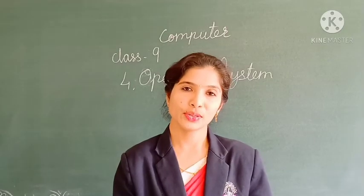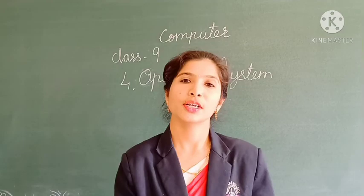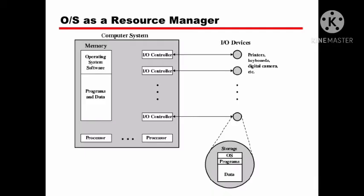Now we are going to see operating system as resource management. A multitasking operating system offers major advantages over a single tasking operating system. An operating system manages the computer's memory — it allocates the main memory and other storage areas to the system and user programs. An operating system makes sure that each process running in a system does not interfere with the code or data of any other process either accidentally or deliberately.